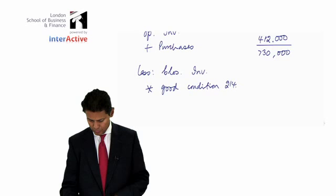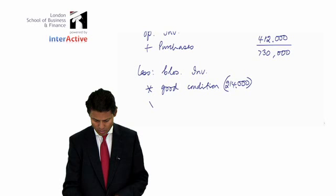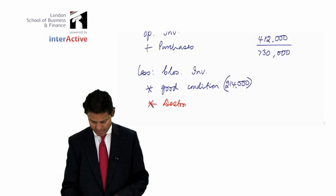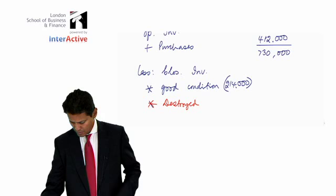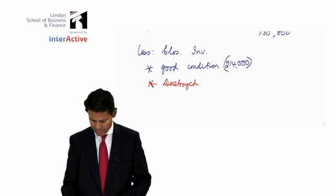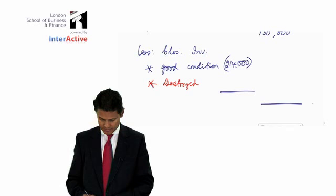I'll say less closing inventory or stock. You have some good condition stock at £214,000, and you've got some stock that's been lost which I shall say destroyed in fire. And certainly that figure I don't know. So what I'm going to do is put it to one side, leave it, leave a gap, and the figure that we have here is cost of sales.